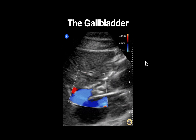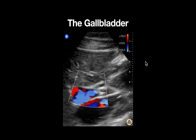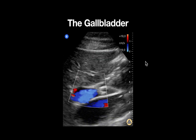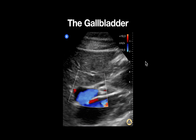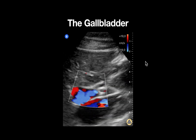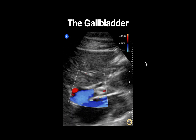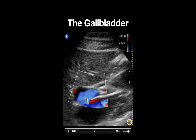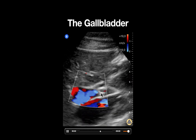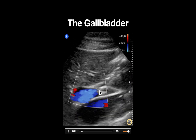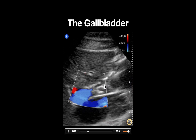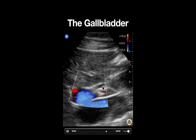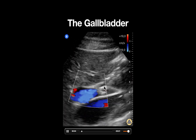If it is unclear, color Doppler can be applied to differentiate. In this zoomed view with the application of color Doppler, we can identify this structure as the portal vein and this pulsatile vessel as the hepatic artery. Just anteriorly, we notice a tubular structure without flow — this is the common bile duct.